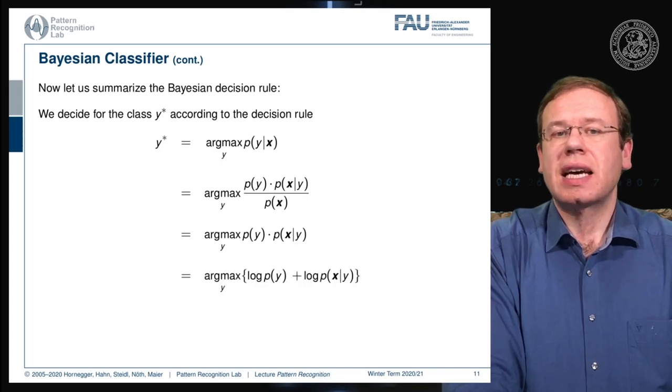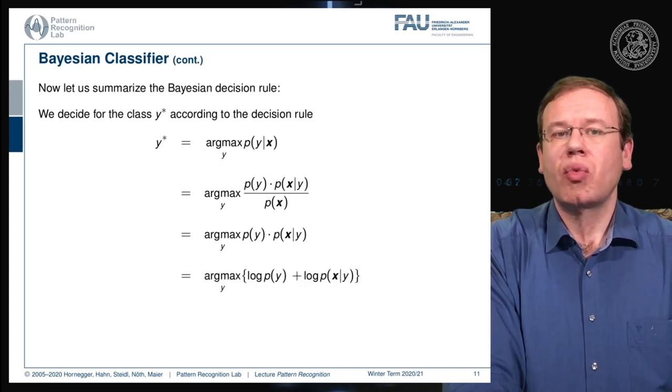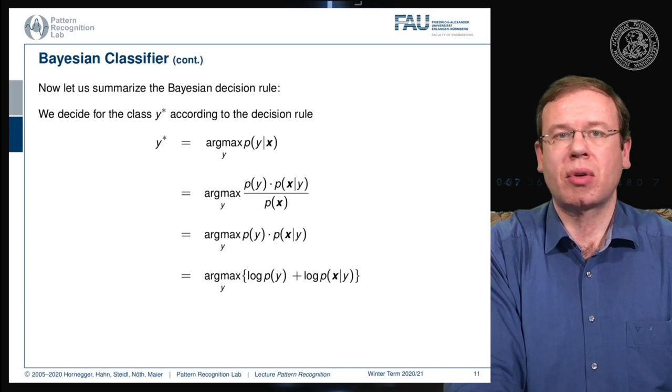This can then also be reformulated in the so-called log likelihood function. Here we use the trick that we apply the logarithm to this multiplication, which allows us to decompose the multiplication into a sum of two logarithms.